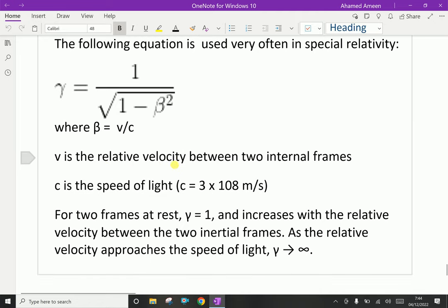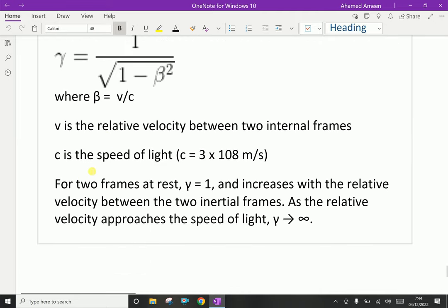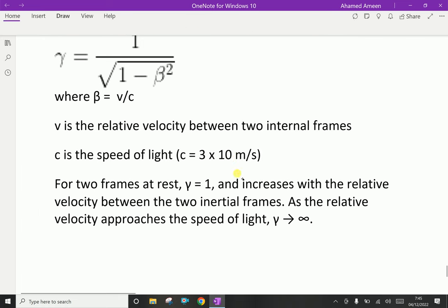v is the relative velocity between two inertial frames. c is the speed of light, nearly 3 times 10 to the power 8 meters per second.